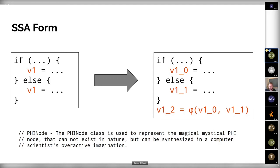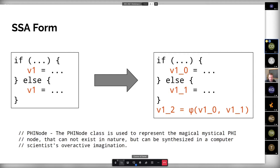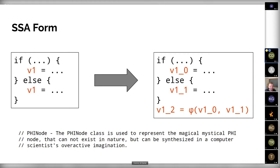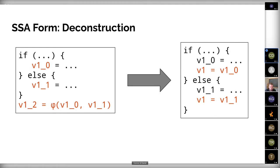Jason just joined — hi Jason. We were more in the introduction so you didn't really miss anything. The idea is that we go over the algorithm once again more slowly, to allow asking questions and see if everything is clear. So let's skip the SSA form stuff — I hope SSA is clear for everyone, including the deconstruction and inserting copies at control flow edges.